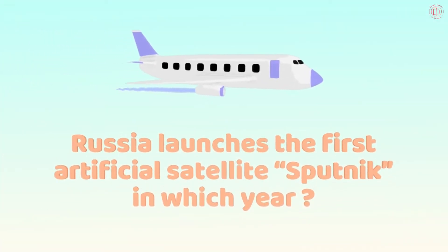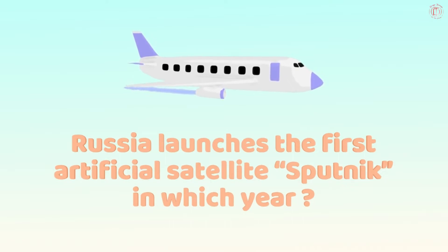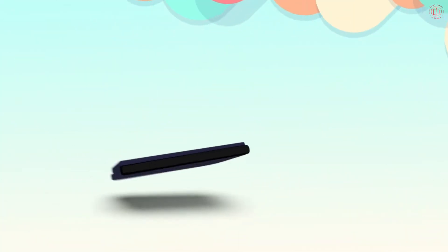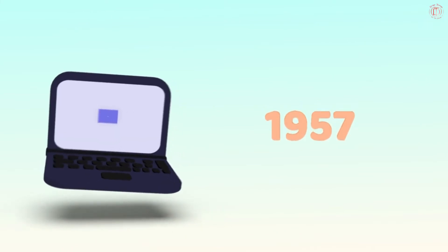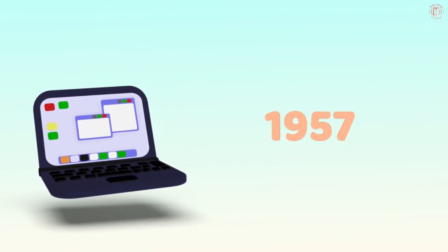Russia launched the first artificial satellite, Sputnik, in which year? Let's see the answer — it's 1957.